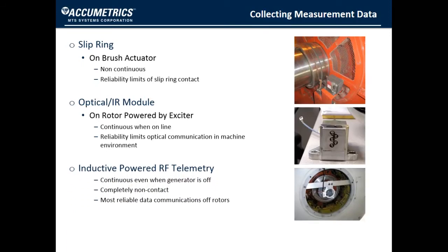The third method used in Accumetrics EFREM system is inductive-powered radiofrequency telemetry. It is a continuous method, even when the generator is turned off, and it is also the most reliable means of data communication off of rotors.